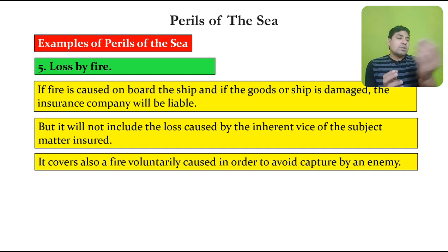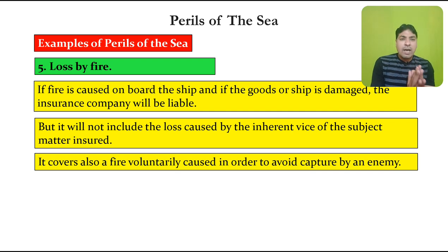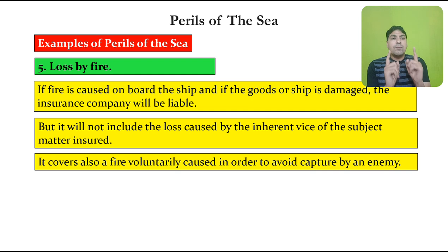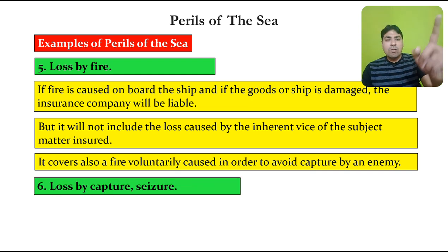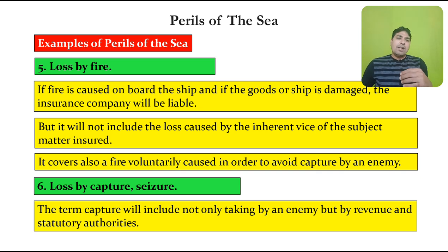It covers also a fire voluntarily caused in order to avoid capture by an enemy. If the policy holder sets fire to the ship to prevent the enemy from capturing it, that is covered. Additionally, if an enemy or revenue authority captures or seizes the ship, that loss also comes under perils of the sea.